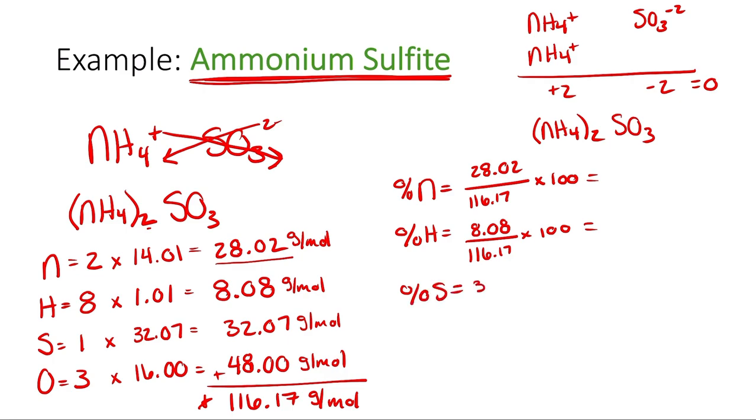I'm going to do the same thing for sulfur, 32.07 divided by 116.17 times 100. And then lastly, the same thing for oxygen, 48.00 divided by 116.17 times 100.